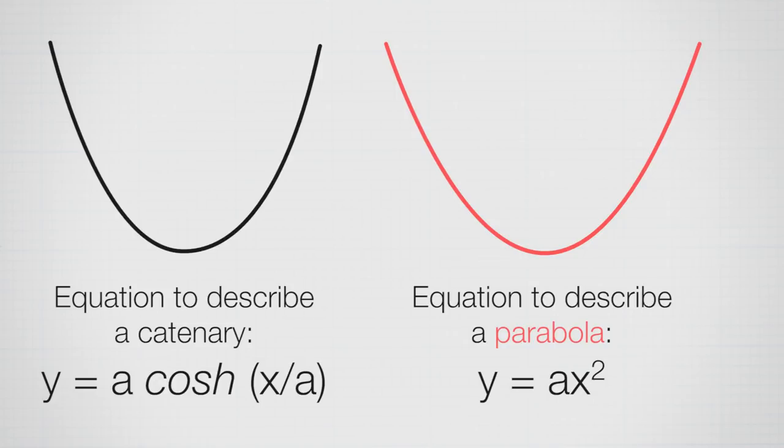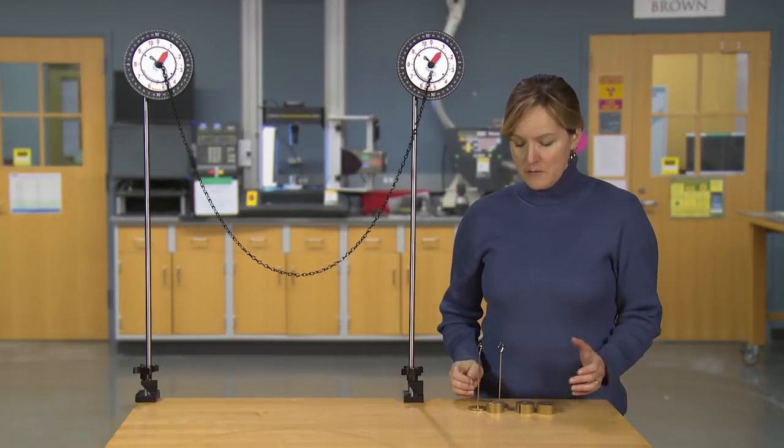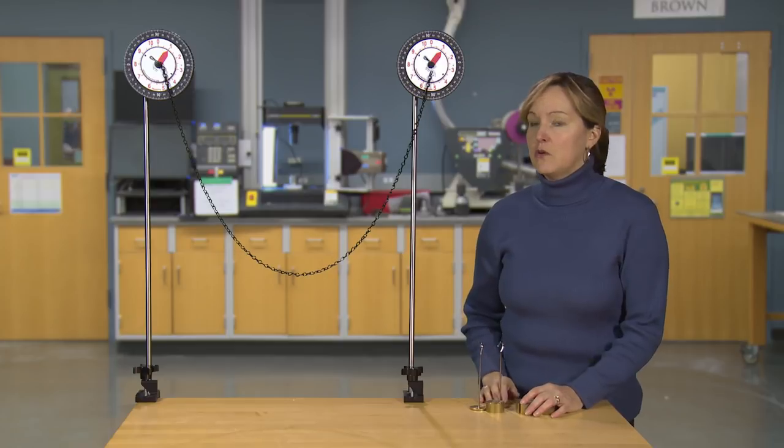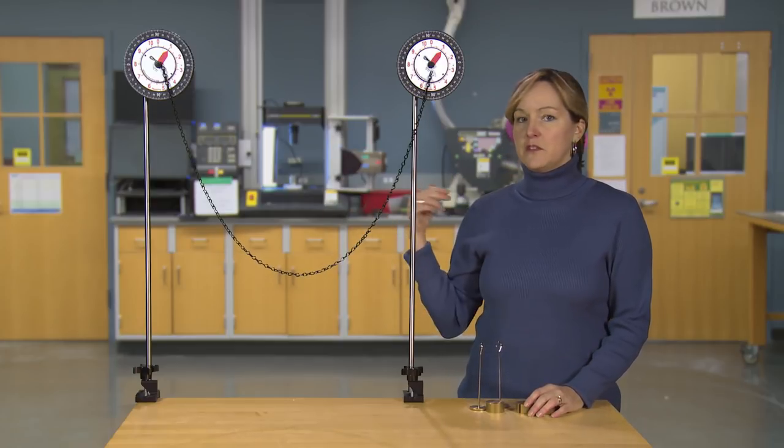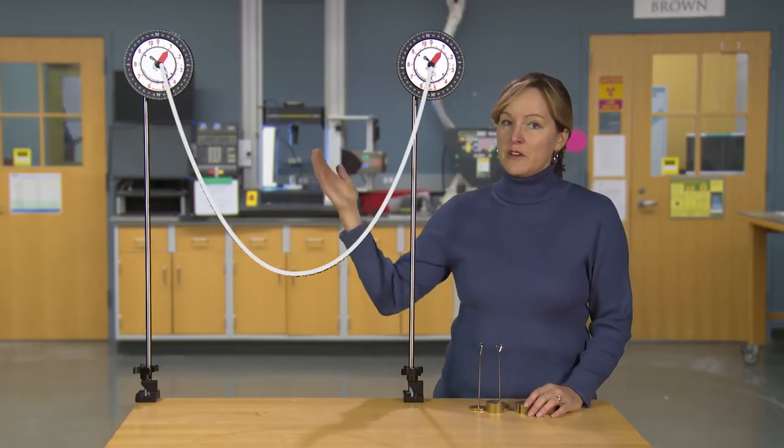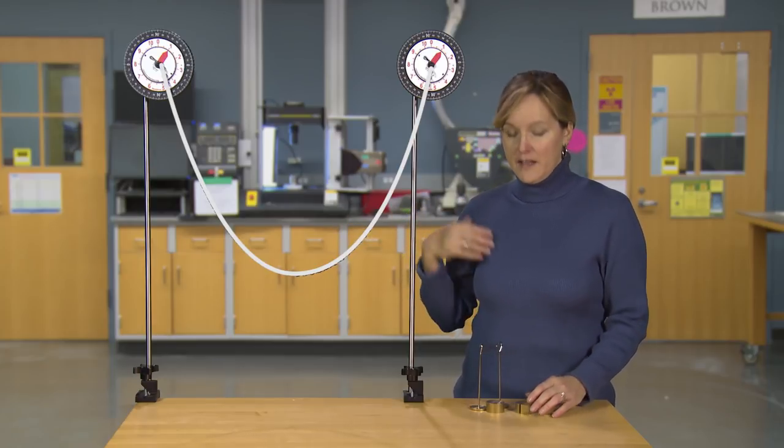So engineers will often actually use the math for a parabola even when they're looking for a catenary. How about the matching exercises? So one of the images that we showed you was a chain with no load or a rope with no load. We now know that that's called a catenary.